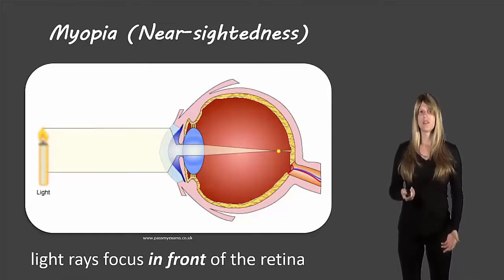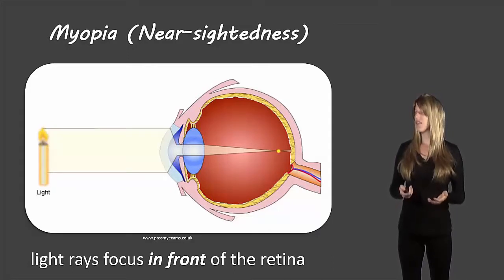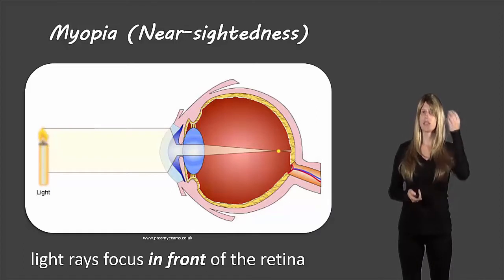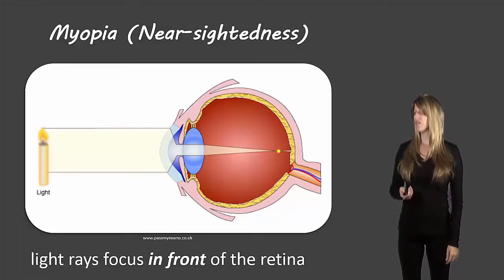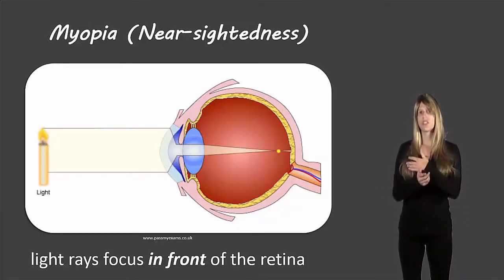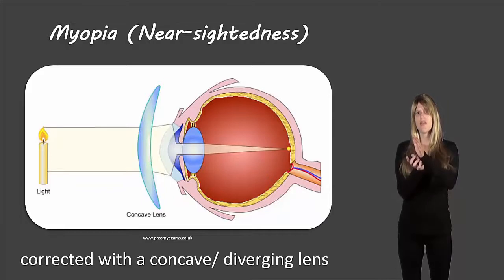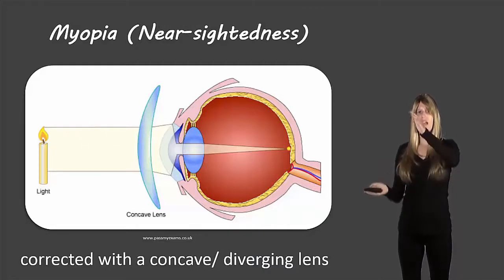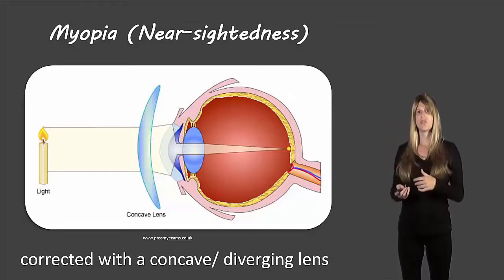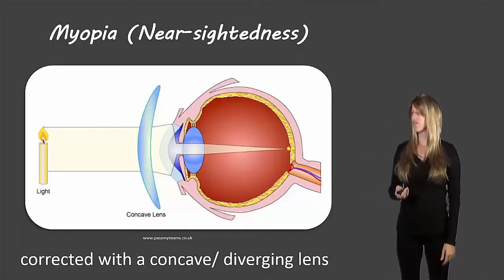Myopia, also known as nearsightedness, is when light rays focus in front of the retina. Instead of the image forming at the back of the eye, it's produced too far forward, meaning the light rays are being converged too strongly. To fix this we use a diverging lens, which makes the light rays bend outwards before our lens converges them. Because the rays have diverged and are further apart, even though our eye converges too strongly, they'll end up converging properly at the back of the eye.